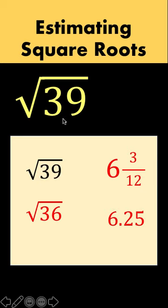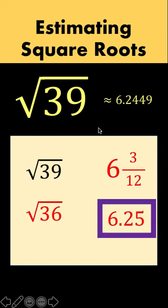And the precise value of the square root of 39 is 6.2449. And notice that our value is very close to the actual square root of 39. Let's have another example.